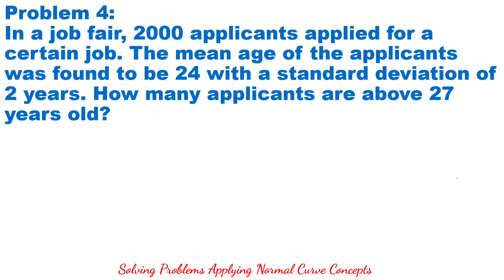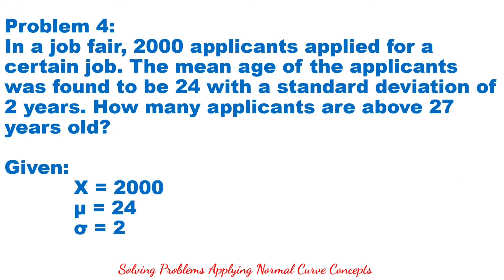In our last problem, in a job fair, 2,000 applicants applied for a certain job. The mean age of the applicants was found to be 24 with a standard deviation of 2 years. How many applicants are above 27 years old? The givens are n equals 2,000, mean is 24, standard deviation is 2, and we are looking for the probability that X is greater than 27.